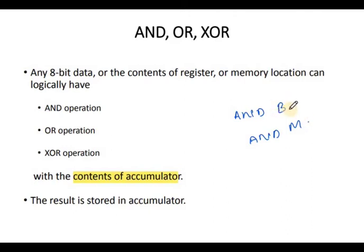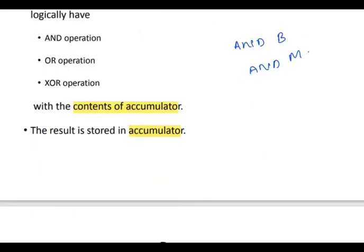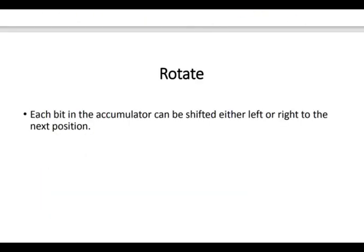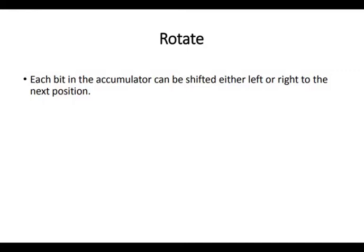Whether it is a register value or memory value, it can be operated with the accumulator value. Another important thing: the result is stored back in the accumulator. Please keep this in mind. Next is rotate — each bit in the accumulator can be shifted either left or right to the next position.